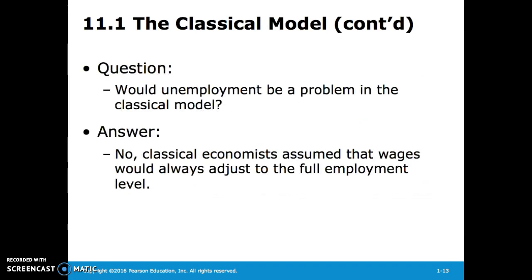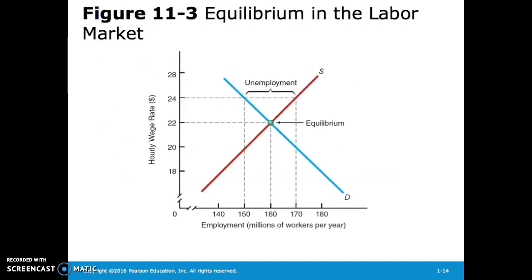Would unemployment be a problem in the classical model? No — classical economists assumed that wages would always adjust to the full employment level. In this graph, we see that the equilibrium wage rate should lead to an equilibrium level where supplied labor is exactly equal to demanded labor.